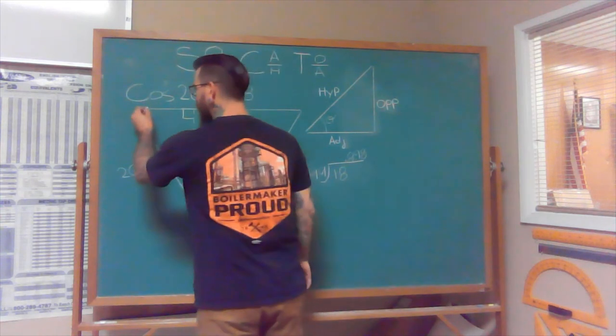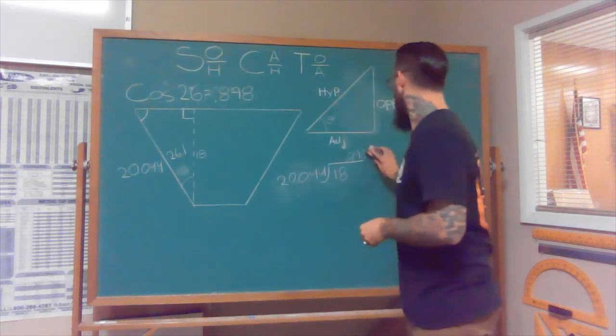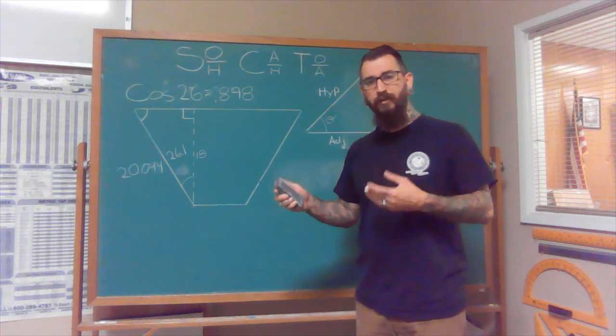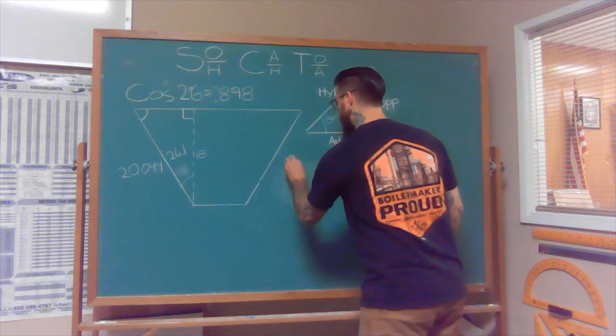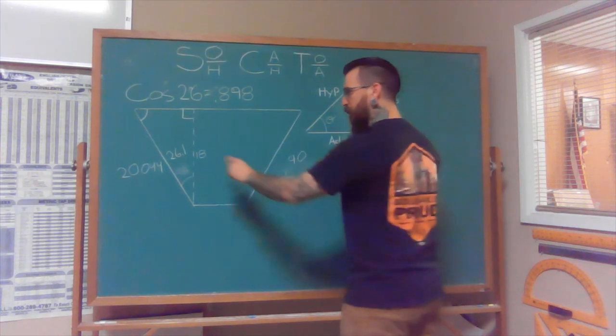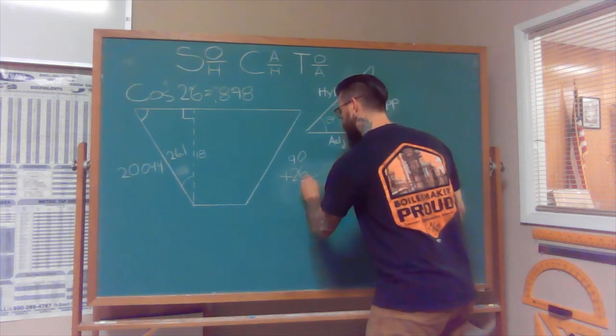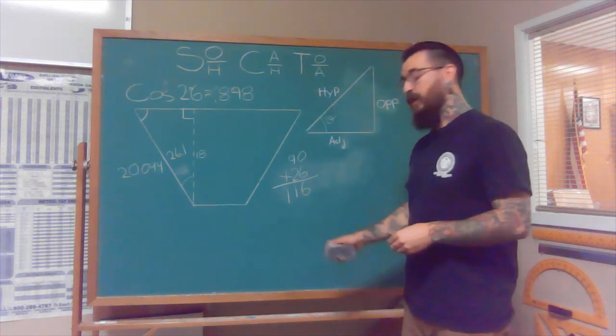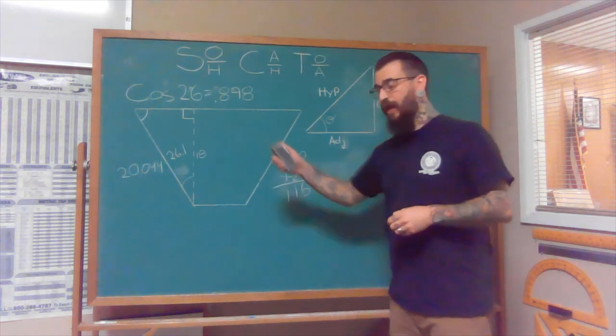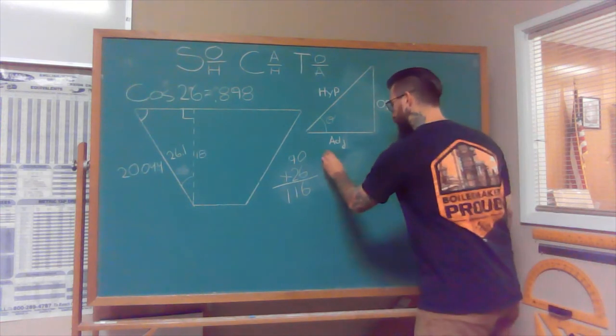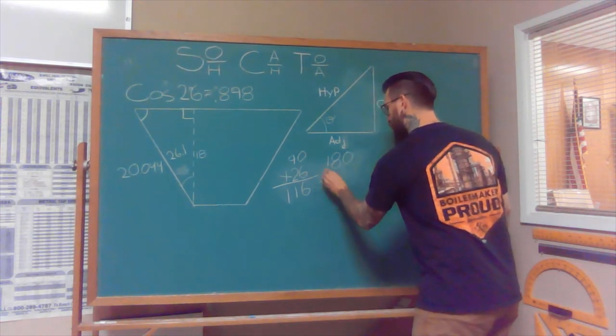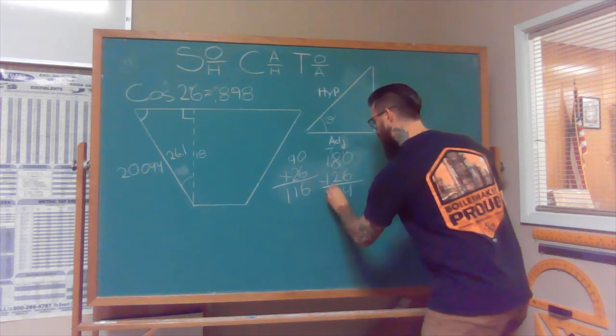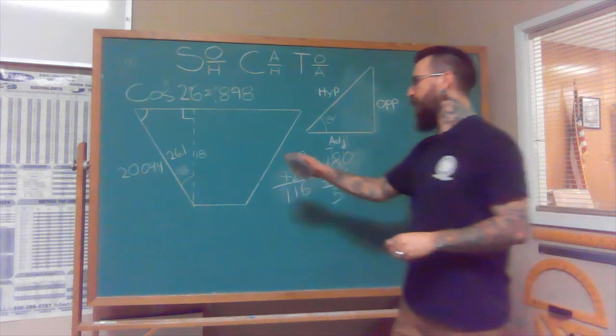So back to good old fashioned 180 degrees inside every triangle. So we have 90 degrees. And just for simplicity's sake, we'll keep this at 26. Well, we know that this angle plus that angle equals 116 degrees. Now, if we subtract that from the total amount of angle inside a triangle, which is 180 degrees, we find out that the missing angle in here is 54 degrees.